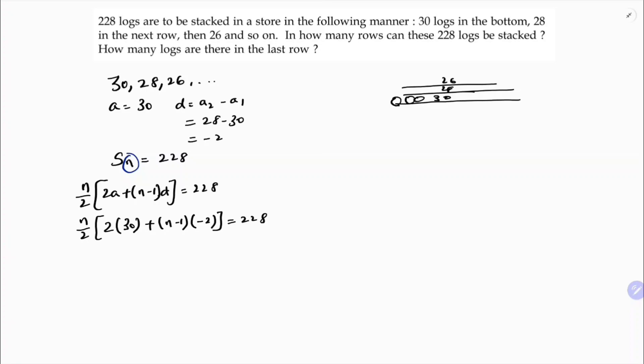Equals 228. So here n by 2, 2 times 30 is 60, n into minus 2, minus 2n, n minus 1 into minus 2 is...